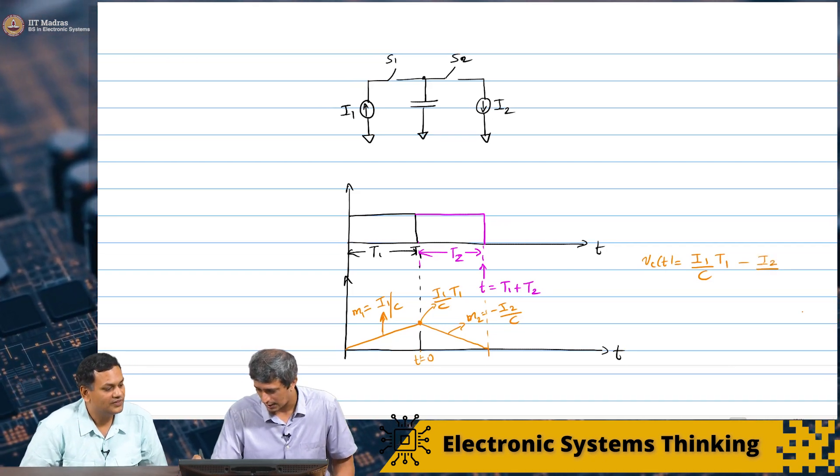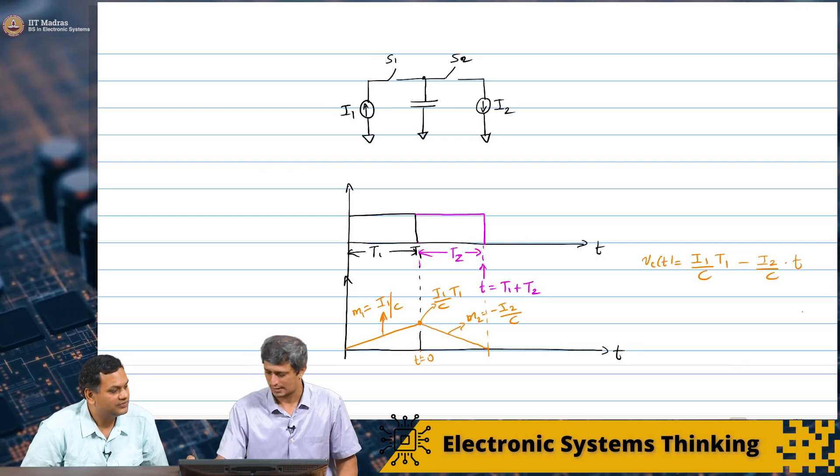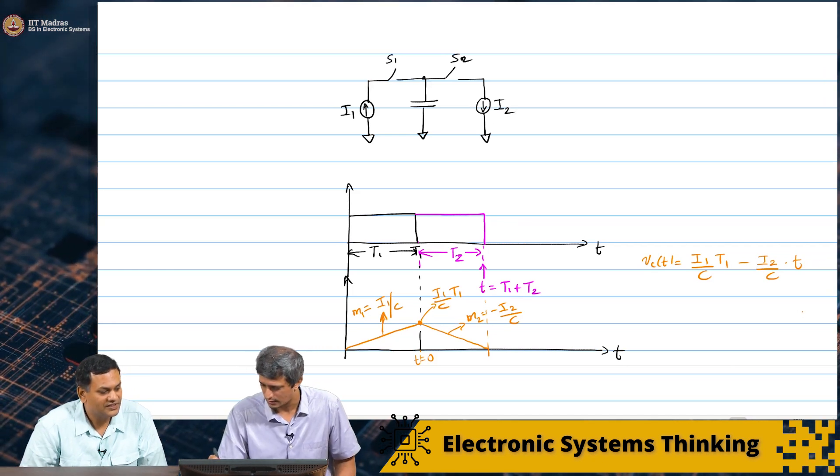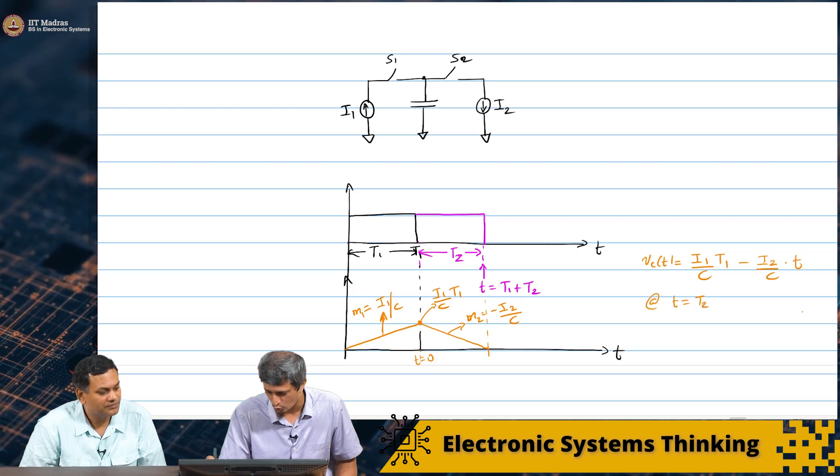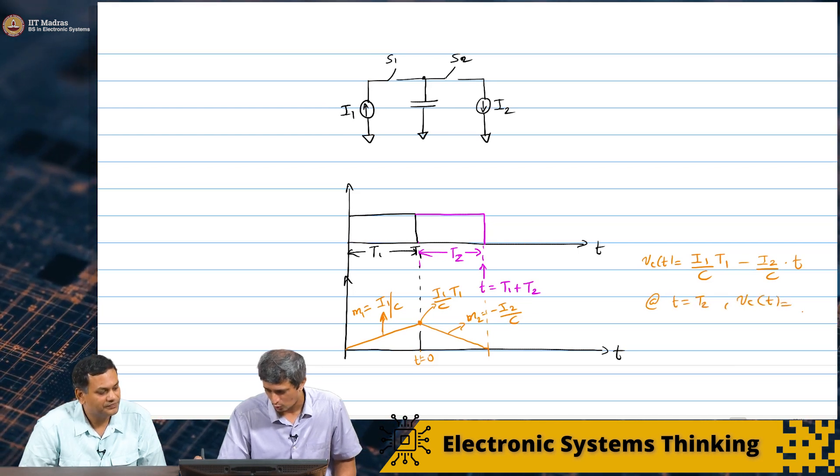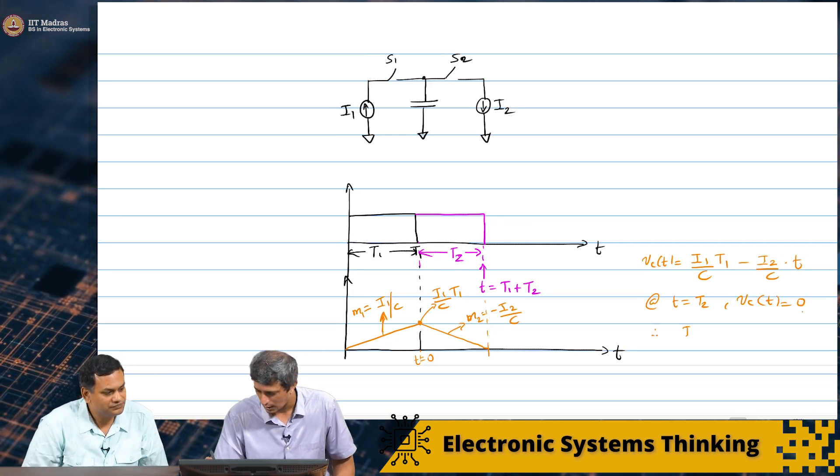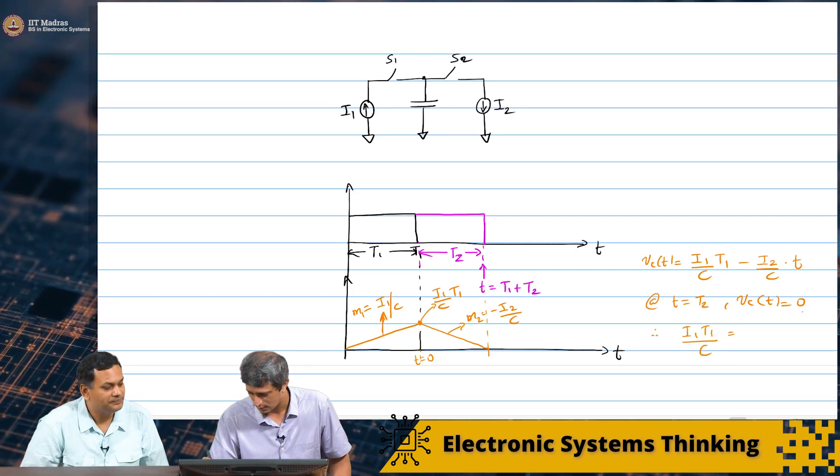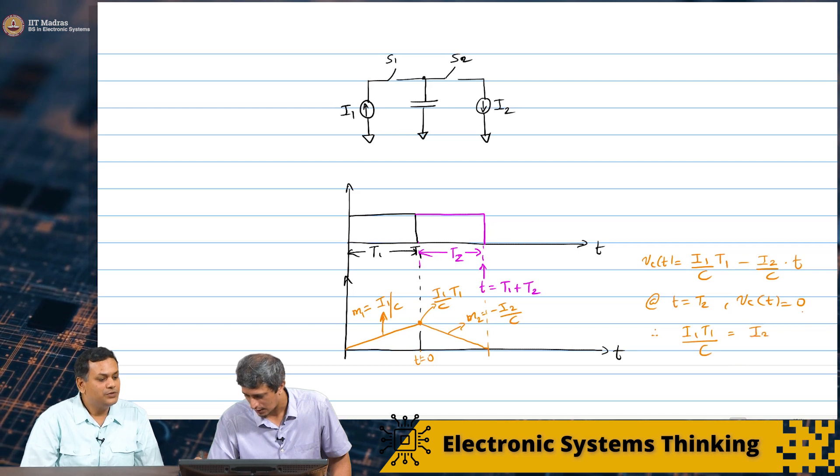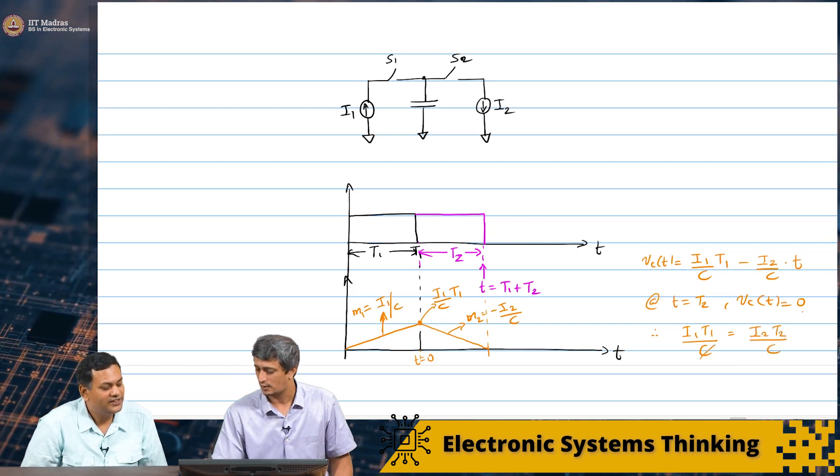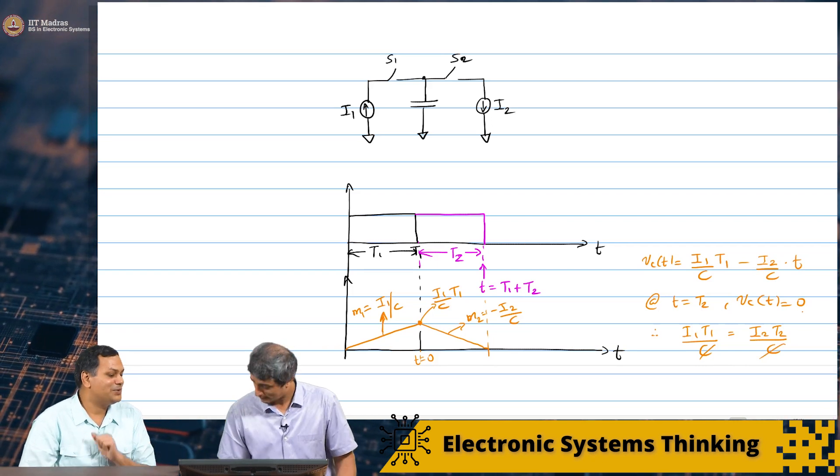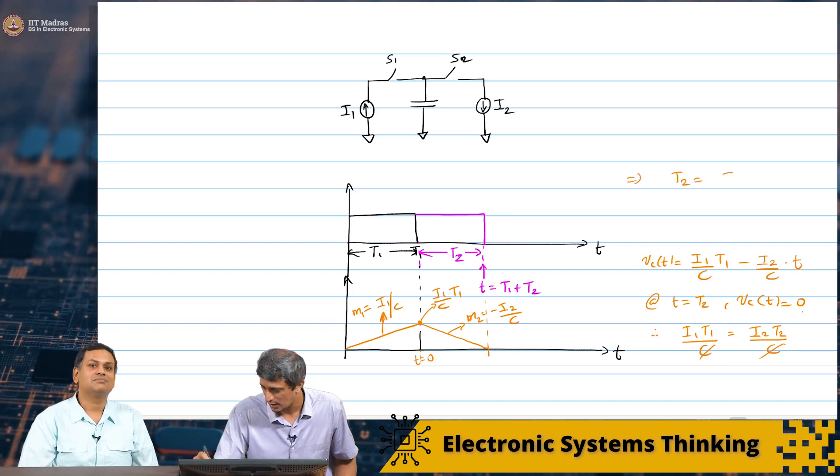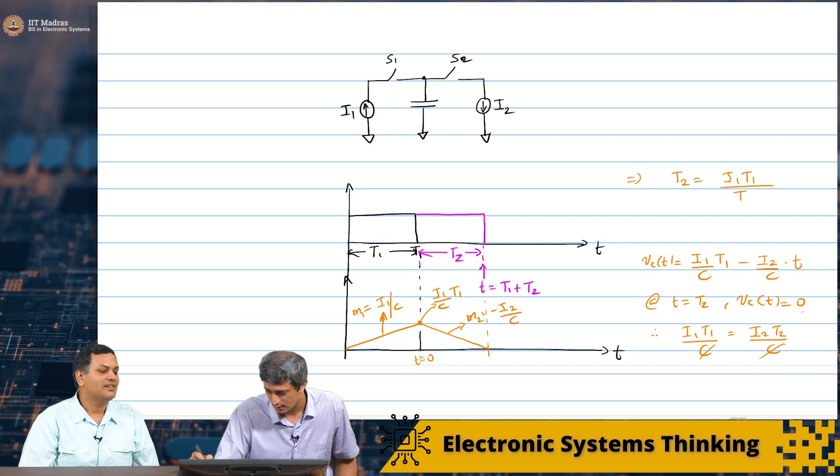With minus I2 by C into T2. At T equal to T2, I will say here, at T equal to T2, we want Vc of T to go to zero. Therefore, I1 T1 by C should be equal to I2 T2 by C. Oh, interesting. So, you have a condition that I1 T1 is equal to I2 T2.